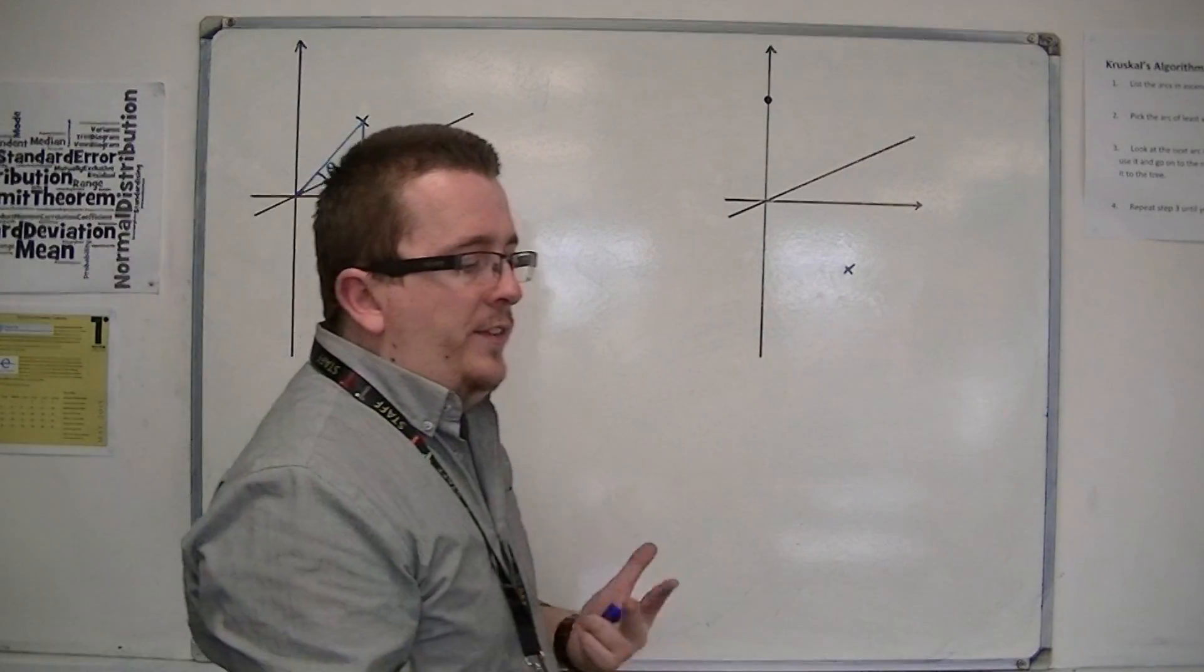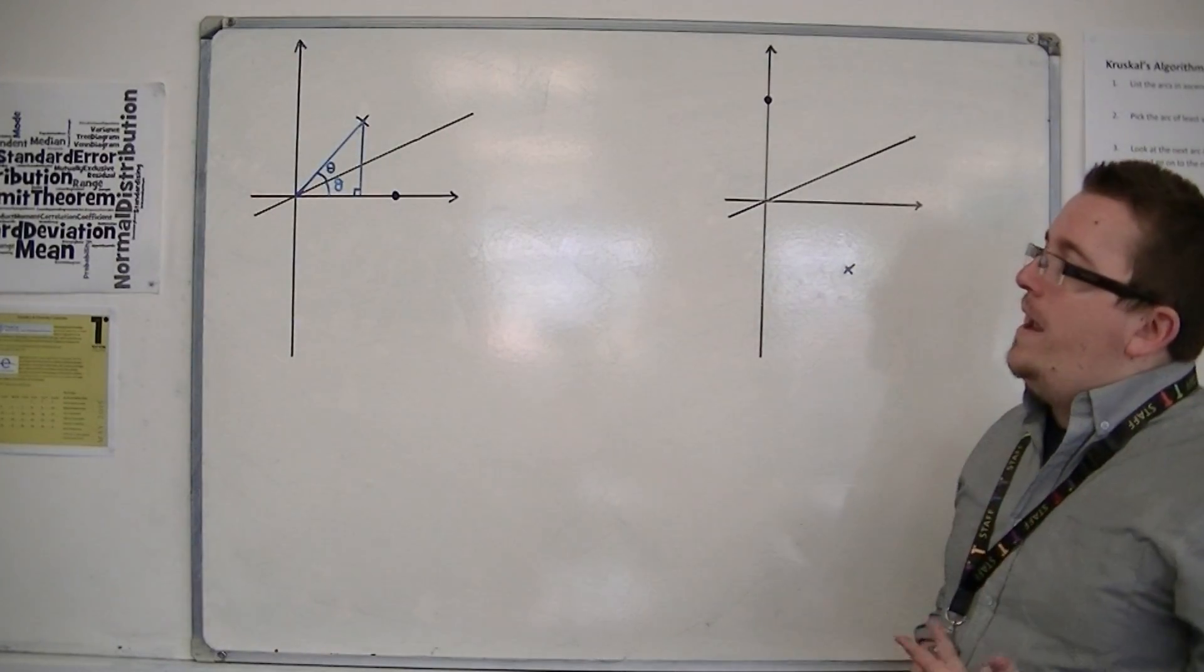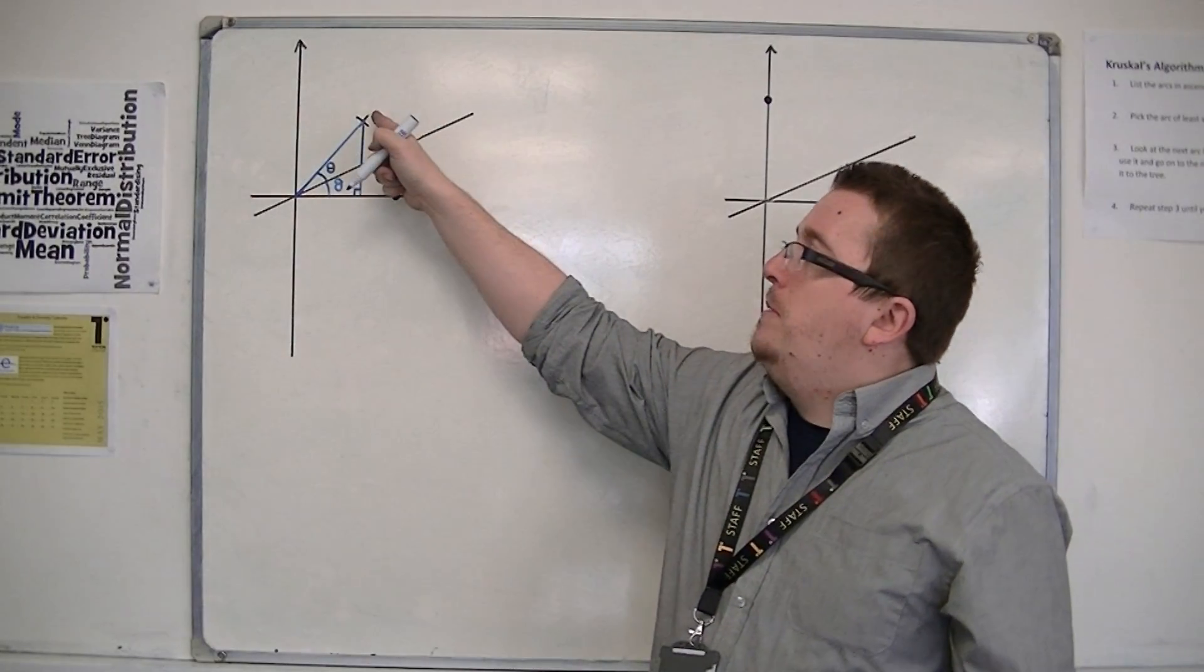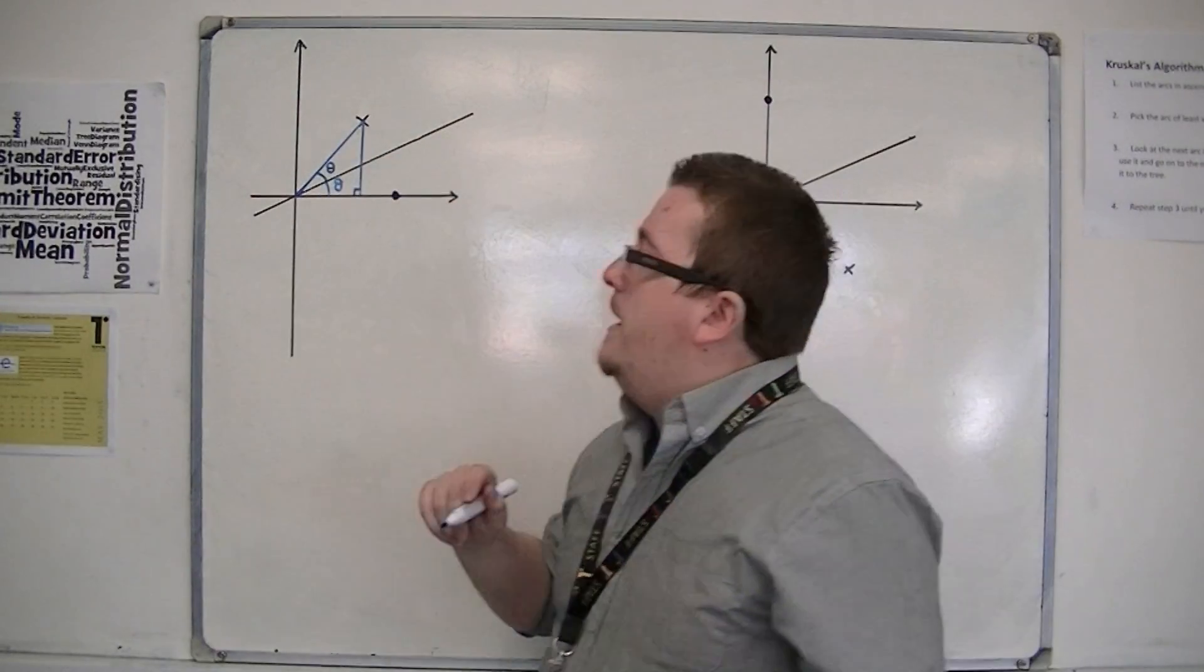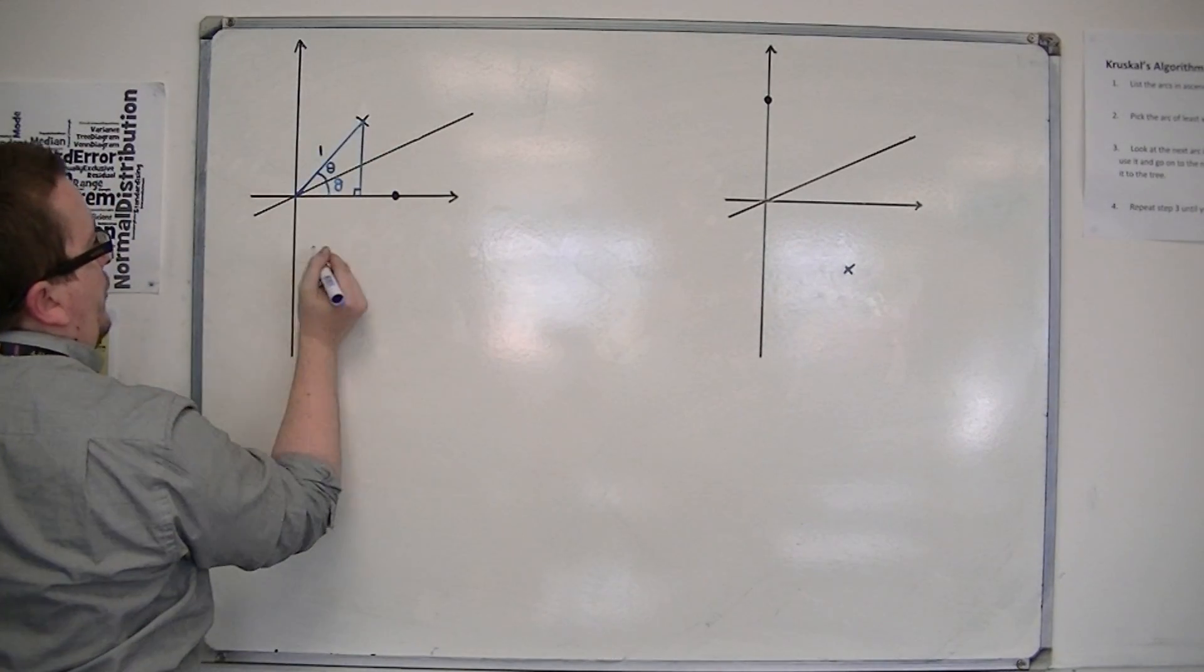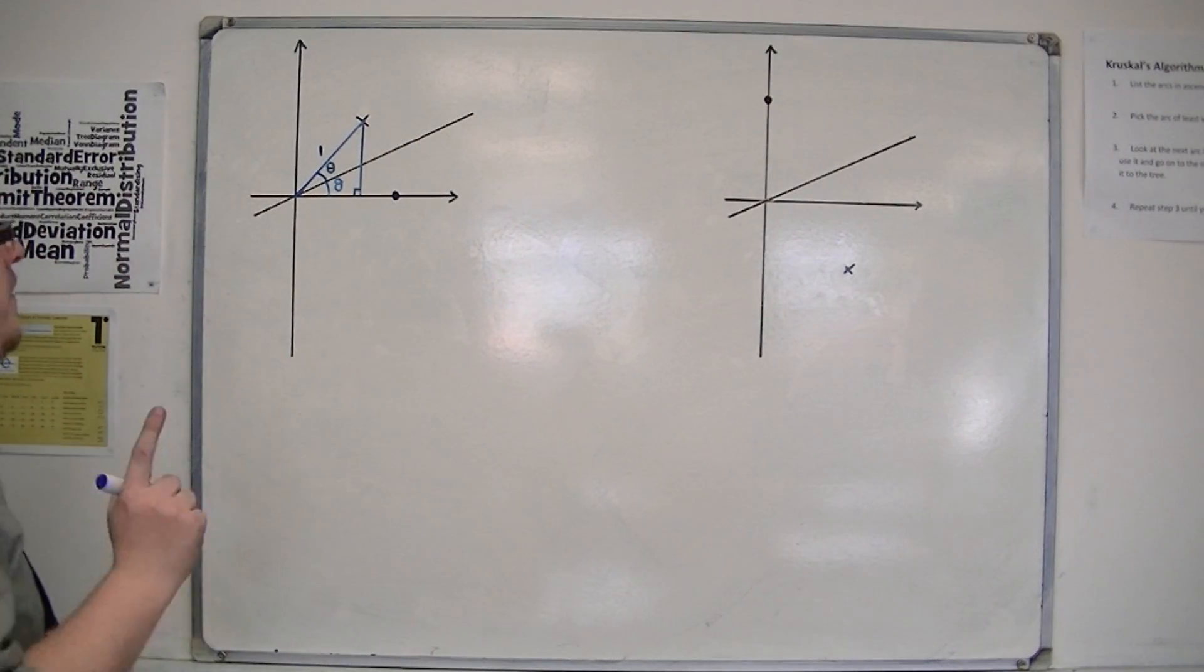Now remember what I'm trying to do. I'm trying to find the coordinates of where this point has gone to, where (1, 0) has been moved to. Now if this length was 1, then that length is also 1. And so, because of that, we can use basic trigonometry.